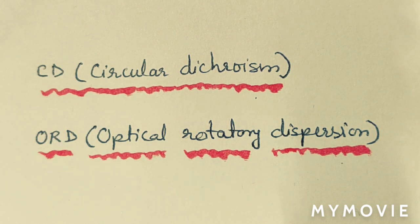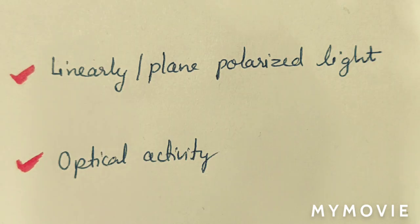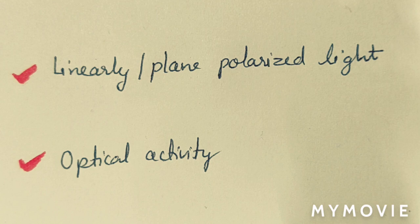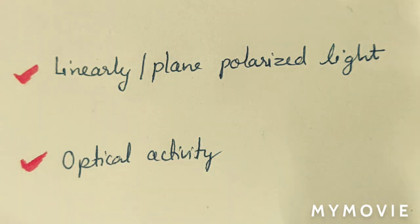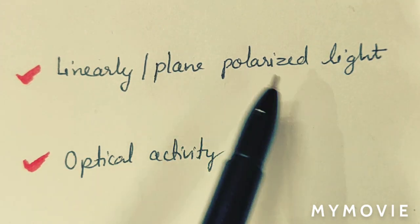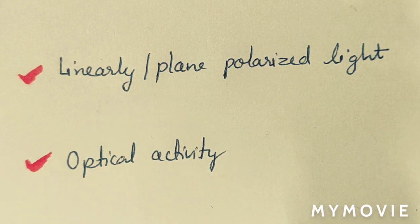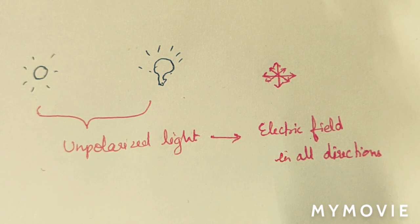Before studying these two spectroscopies, we need to know some related terminology. The two main terms to understand before assigning absolute configuration are: first, linearly or plane polarized light, and second, optical activity.